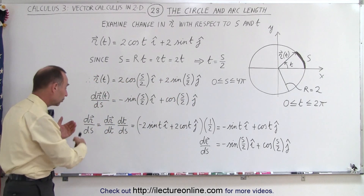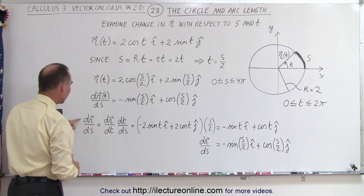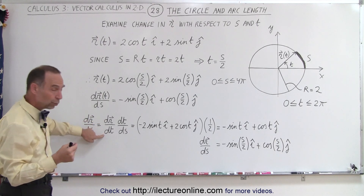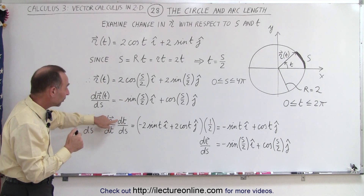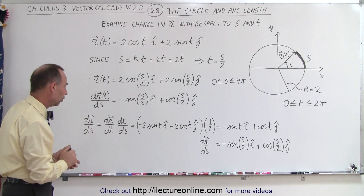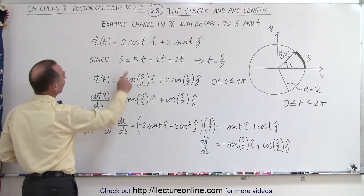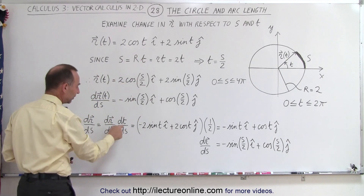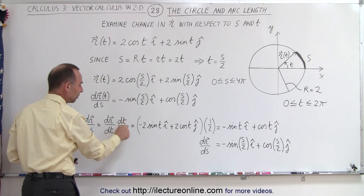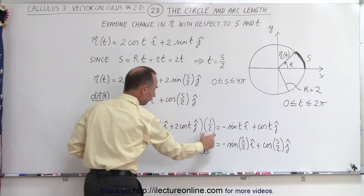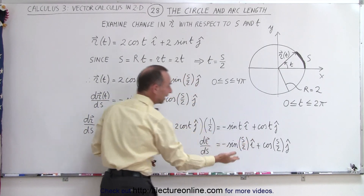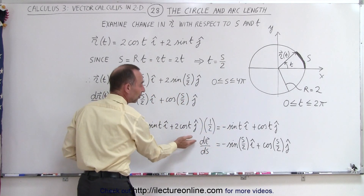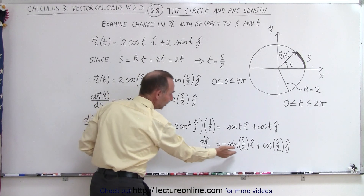Now, there's a relationship via this equation: the derivative of the position vector with respect to the arc length equals the derivative of the position vector with respect to the parametric variable, times the derivative of the parametric variable with respect to the arc length. Taking dr/dt gives the position vector derivative in terms of t, and dt/ds gives 1/2. Multiplying these together, and substituting t = s/2, we recover the same derivative dr/ds as before.